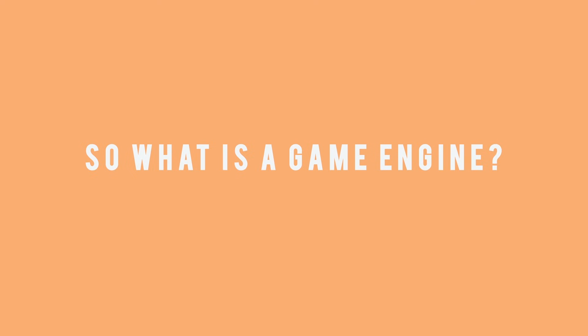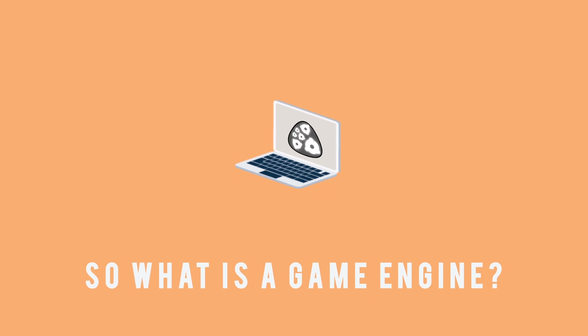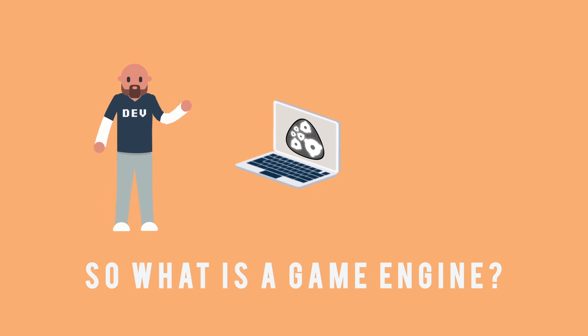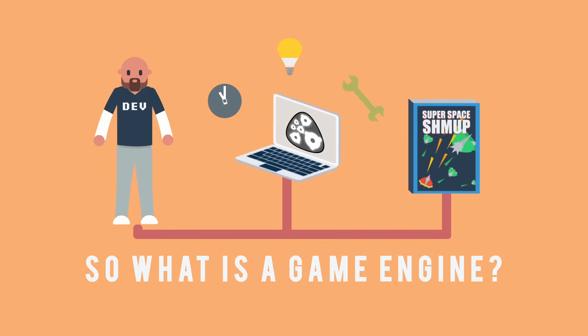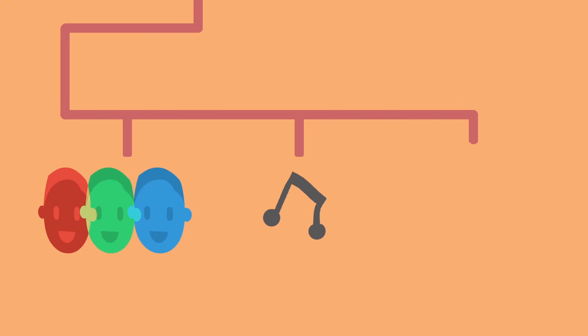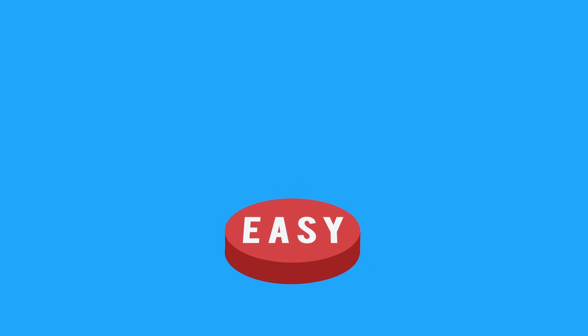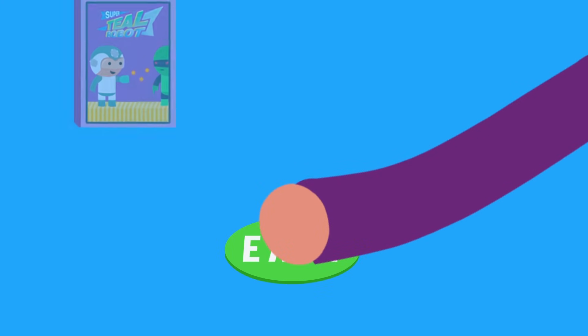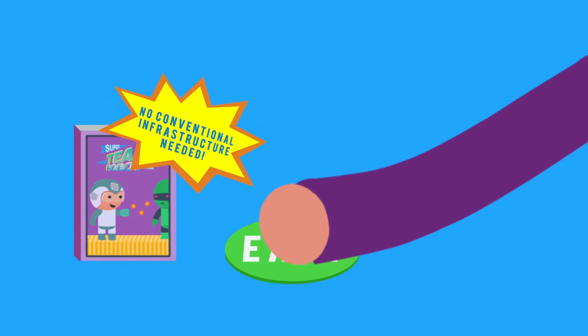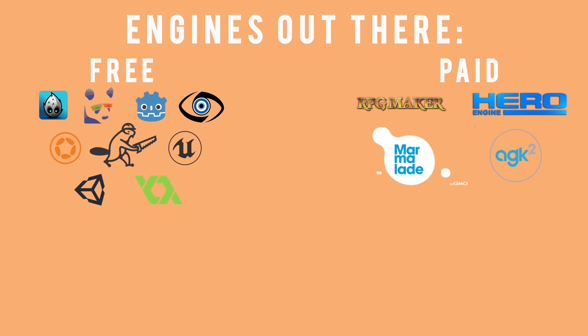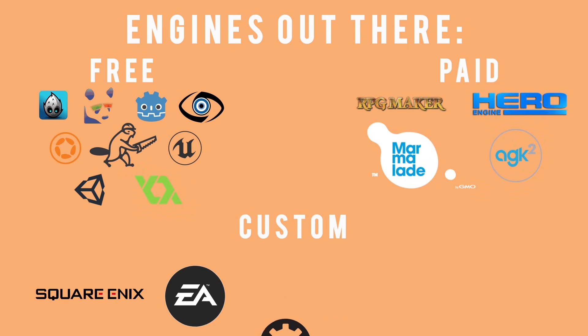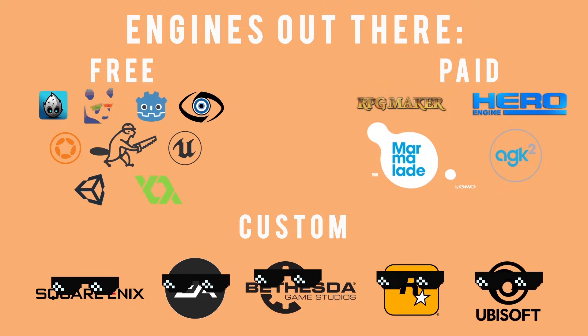So what is a game engine? At a high level, a game engine is a software framework that developers use to create video games. Engines provide tool sets and content pipelines across a variety of commonly used game areas — features, graphics, audio, and code scripts. These tools allow the developer to quickly create game experiences without having to recreate a lot of conventional infrastructure. There are lots of different engines available to developers, some free and some paid, and many development studios have their own custom-made engines that only they use in-house.